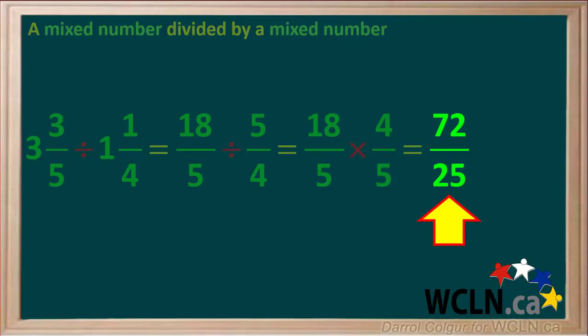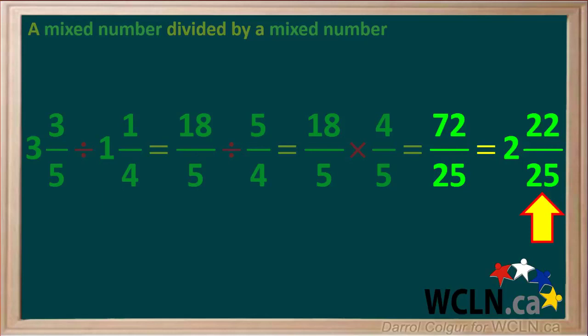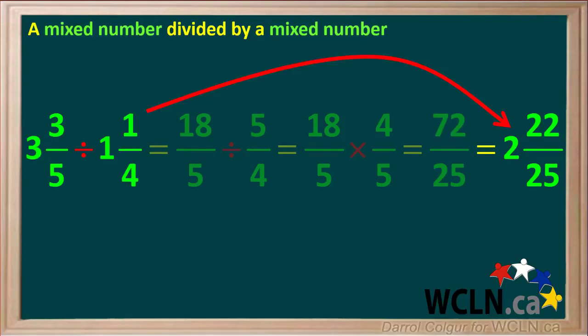This is an improper fraction, so we need to change it to a mixed number. 25 goes into 72 two times; 25 times 2 is 50, and 72 minus 50 is 22. So our remainder is 22 over 25. Our final answer to 3 and 3 fifths divided by 1 and 1 quarter is 2 and 22 twenty-fifths.